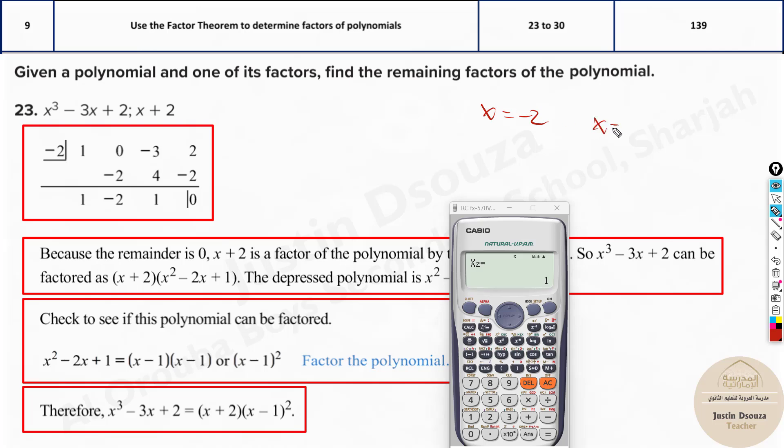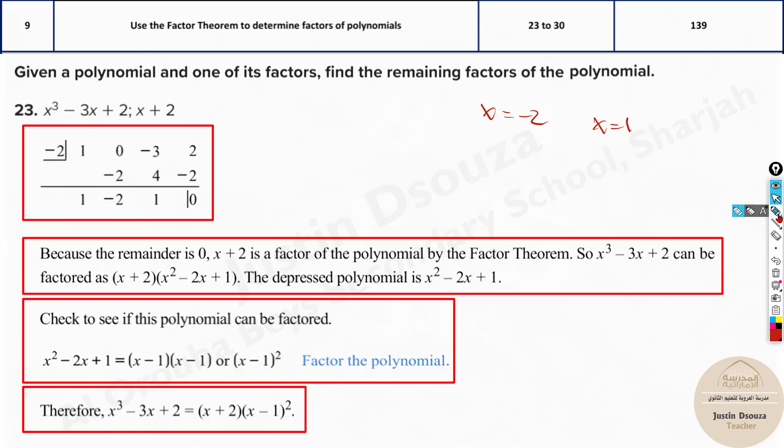Let me write it out: x is equal to 1. There must be one more answer, but you can see it's only two answers that are coming out. It's cubic, so there must be three solutions, right?